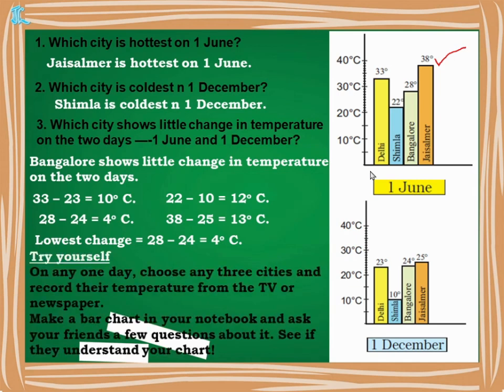Now try this yourself: on any one day, choose any three cities and record their temperature from the TV or newspaper. Then make a bar chart. This chart is called a bar chart because the data is placed in bars. It can be vertical or horizontal. Take the places on one axis and degrees Celsius on the other side, and draw your bars accordingly.